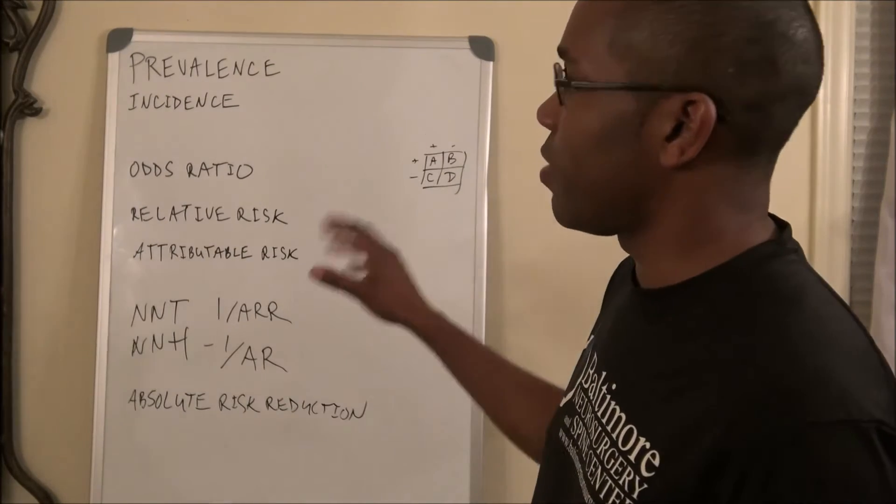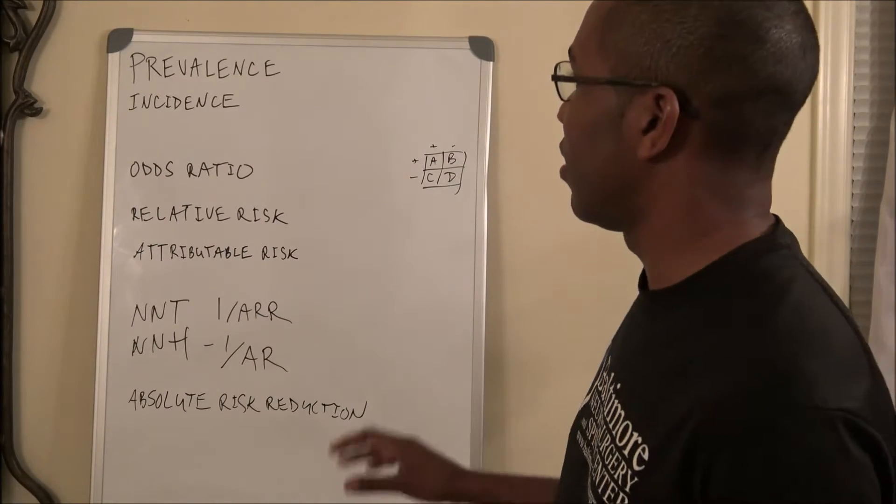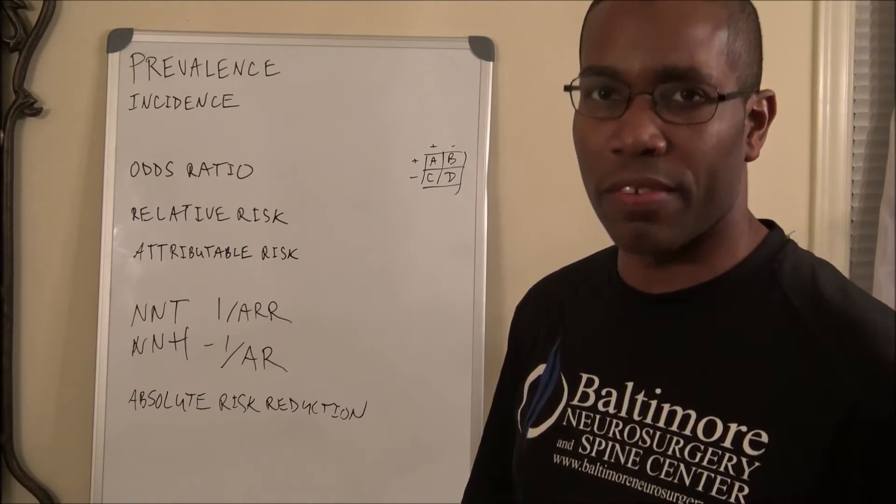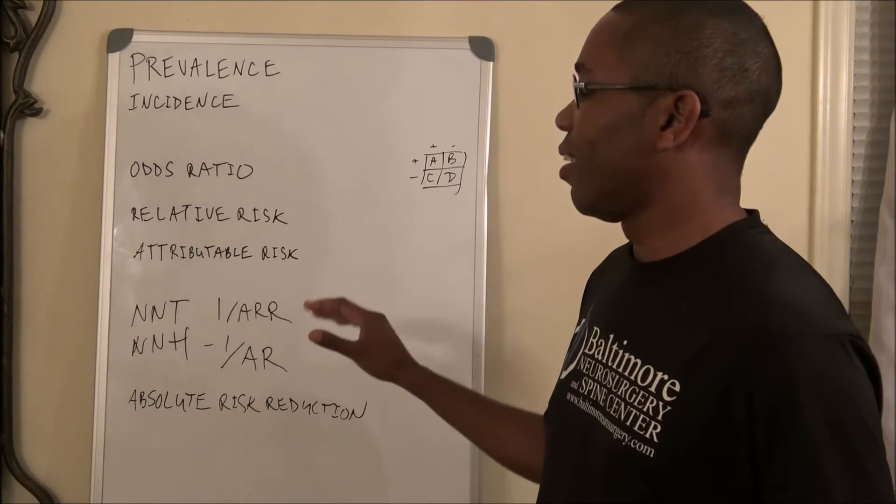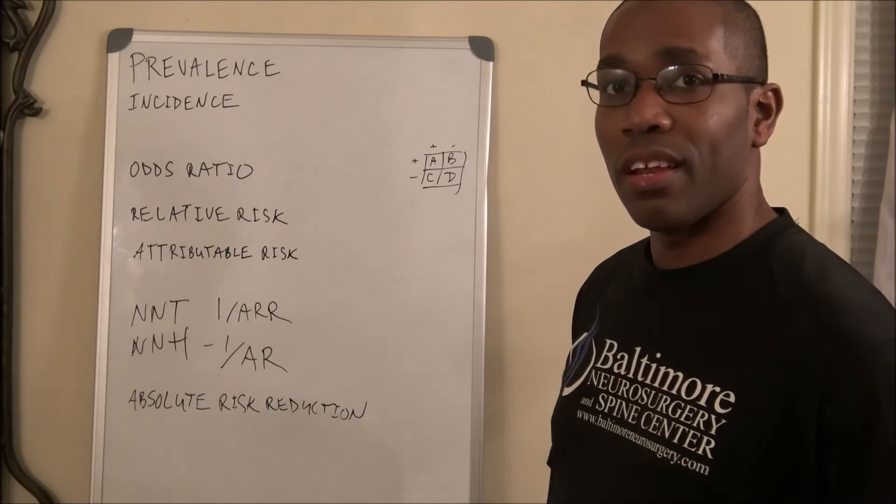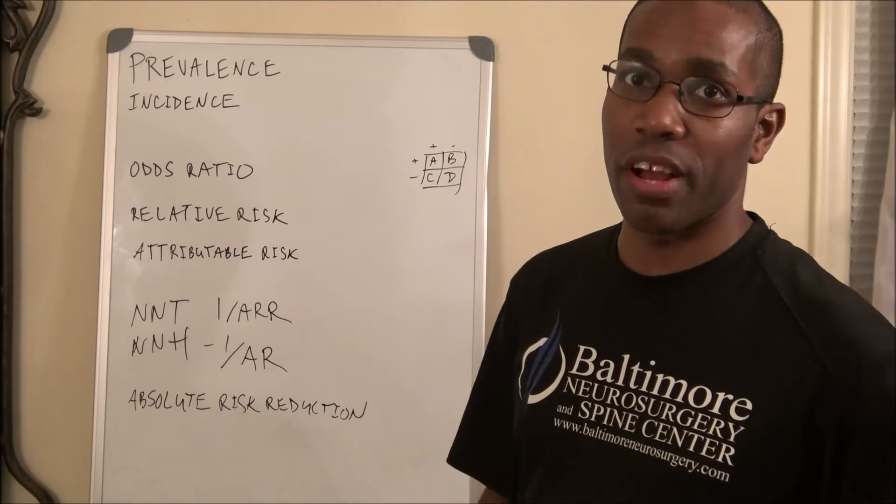I want to talk about prevalence, incidence, odds ratio, relative risk, attributable risk, number needed to treat, number needed to harm, and absolute risk reduction.